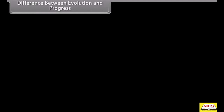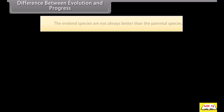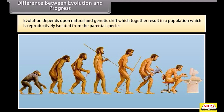In evolution, older species are not eliminated during the formation of new species, and most older and simpler species still survive. The evolved species are not always better than the parental species. Evolution depends upon natural selection and genetic drift, which together result in a population that is reproductively isolated from the parental species.